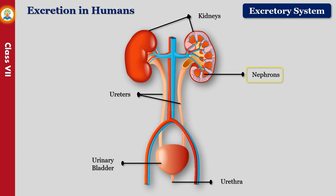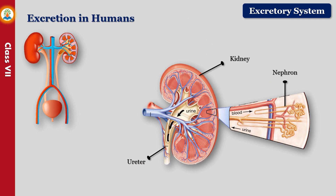Each kidney consists of a large number of coiled tubes called nephrons. Nephrons are the functional units of the kidney and help in forming urine. They are the filtering units of the urinary system, filtering out excess salts, urea, and water from the blood. When blood passes through the nephrons it gets cleaned, and the filtered blood is transported back to other parts of the body. Glucose, amino acids, and salts are reabsorbed in the kidney. The waste is removed as urine; about 95 percent of urine is water, and the rest contains urea and other nitrogenous wastes. A normal adult excretes about 1.5 to 2 liters of urine per day.